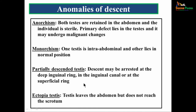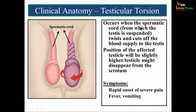Testicular torsion occurs when the spermatic cord from which the testis is suspended twists and cuts off the blood supply to the testis. The position of the affected testicle will be slightly higher or the testicle might disappear from the scrotum. Treatment is to gently untwist or unwind the spermatic cord. Symptoms include rapid onset of severe pain in the testis, and the condition may be associated with fever and vomiting.